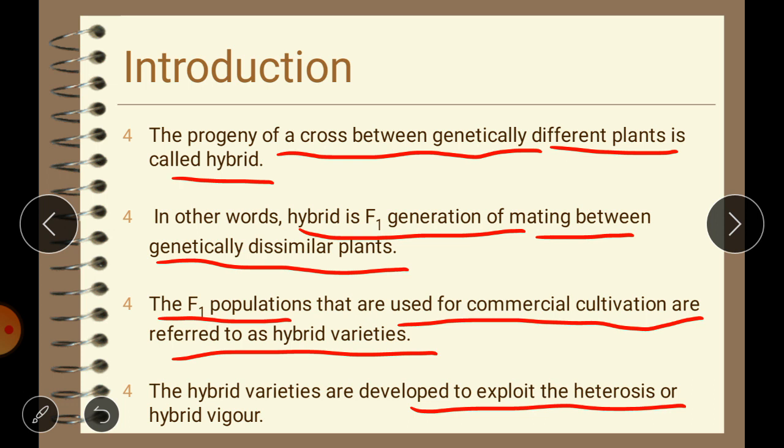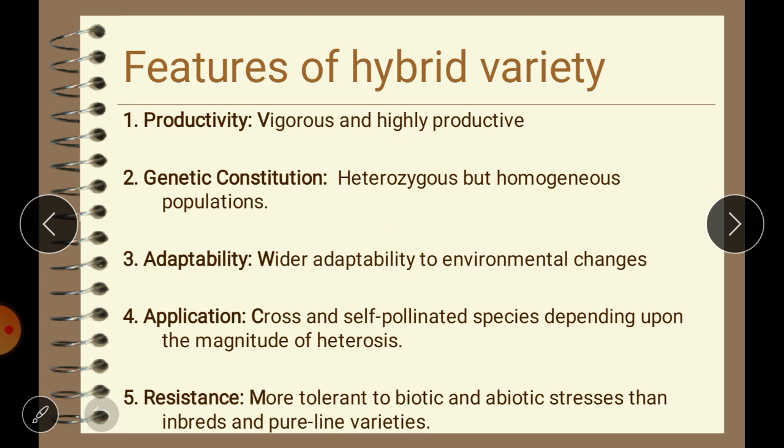Heterosis is the superiority of F1 hybrids in one or more characters over its parents. The term hybrid vigor is used synonymously with heterosis, which means an increase in yield or superiority of F1 over both of its parents. The first important feature of hybrid varieties is productivity — hybrid varieties are vigorous and highly productive because heterosis or hybrid vigor is fully exploited in such varieties.